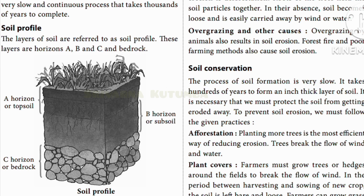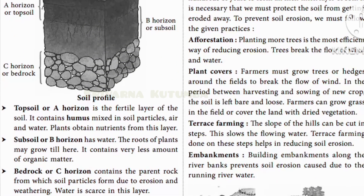The soil profile refers to the layers of soil. There are horizons A, B, C, and bedrock. Horizon A is the topsoil, which usually contains roots. Horizon B is the subsoil — roots and plants may still grow here but it contains very less organic matter. The bedrock (Horizon C) contains the parent rock from which soil particles are formed due to erosion and weathering. There is very little water and no roots or organic matter in this layer.